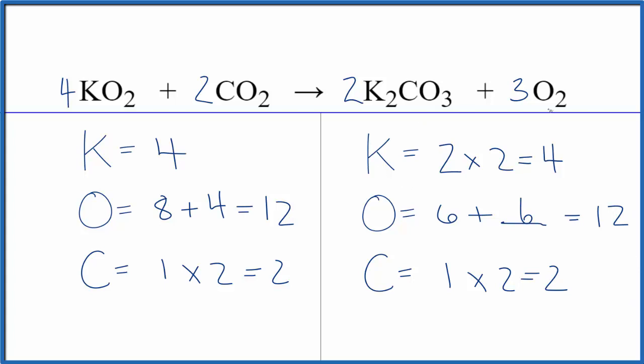So the key here, count the oxygen atoms accurately. Leave them to last when you're balancing, and it's helpful if you have an odd number to try to get that to an even number. This is Dr. B with the balanced equation for KO2 plus CO2. Thanks for watching.